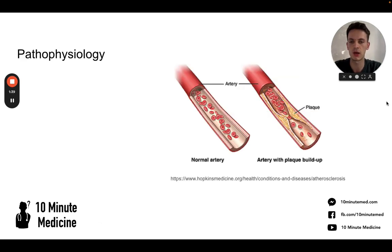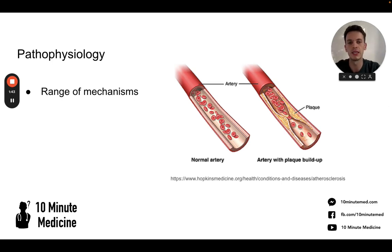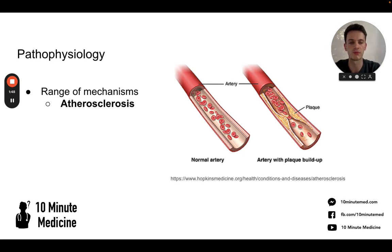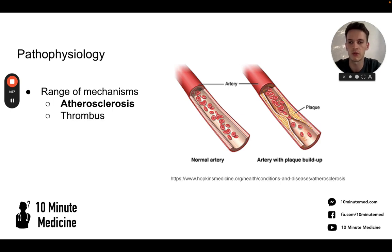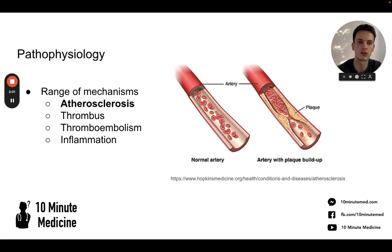Pathophysiology-wise, there's a range of mechanisms, but primarily the main mechanism is atherosclerosis — the build-up of a plaque on the internal wall of the arteries — which causes peripheral arterial disease. There are also a few other mechanisms: thrombus, thromboembolic events, and inflammation can also cause peripheral arterial disease.